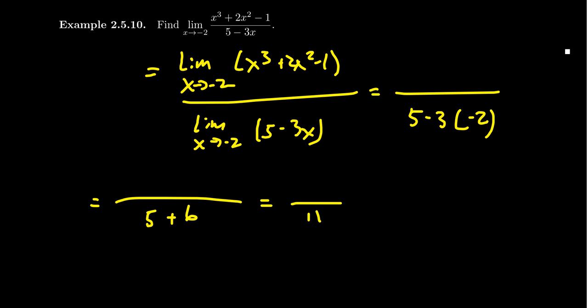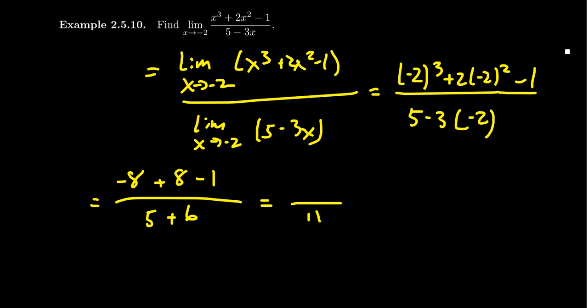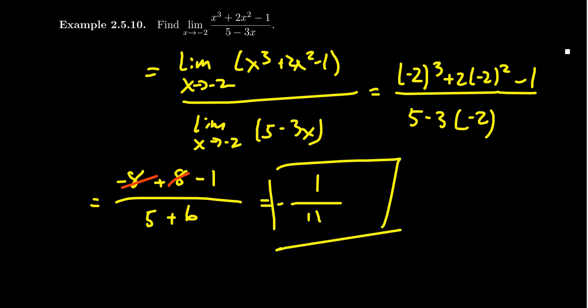Now let's look at the numerator. Plugging in negative 2 gives negative 2 cubed plus 2 times negative 2 squared minus 1. Negative 2 cubed is negative 8; negative 2 squared is positive 4, times 2 is positive 8; then minus 1. The negative 8 cancels with positive 8, and we end up with negative 1 over 11. So the limit is negative 1 eleventh.